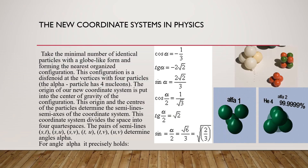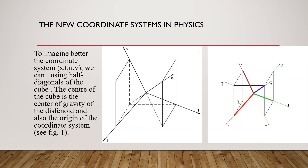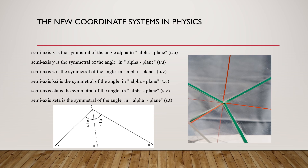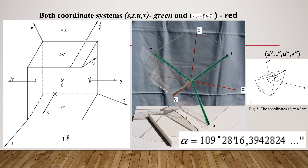The alpha particle has four nucleons. The coordinate system SDUV uses half-diagonals of the cube. Semi-axis X is symmetrical to the angle alpha, in alpha planes. The axes are labeled S, D, U, V — shown in green and Cartesian red.